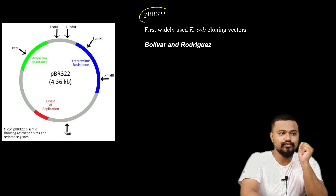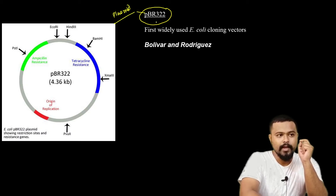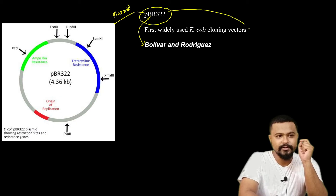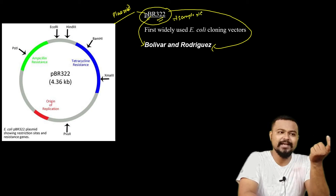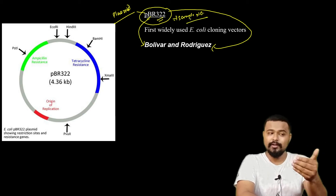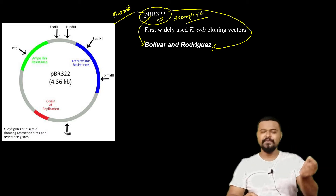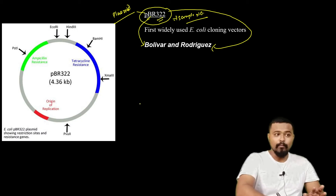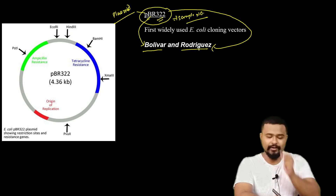The first example is pBR322. The 'p' stands for plasmid, 'B' and 'R' stand for Bolivar and Rodriguez — the two scientists who invented this plasmid. '322' is the sample number. So pBR322 is an important vector that is widely available.